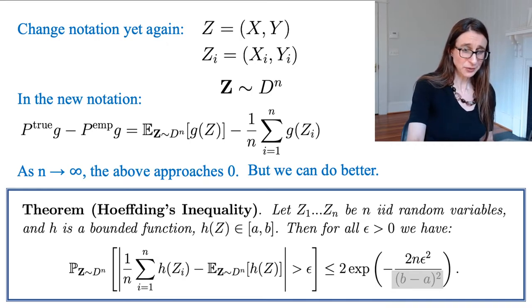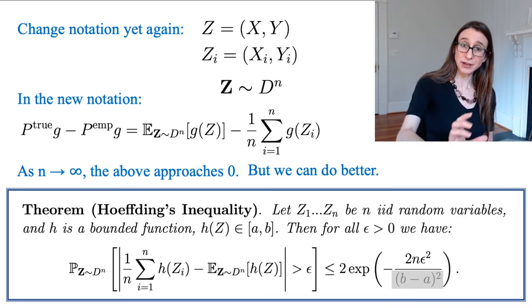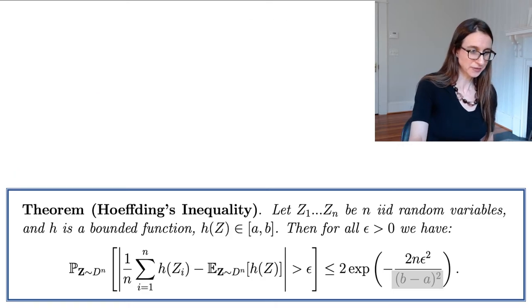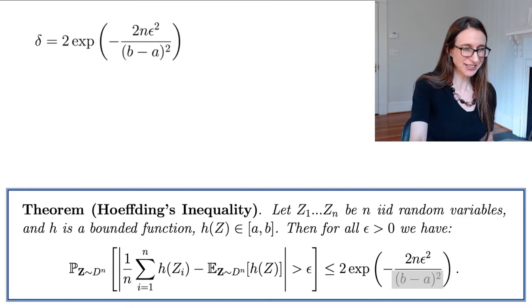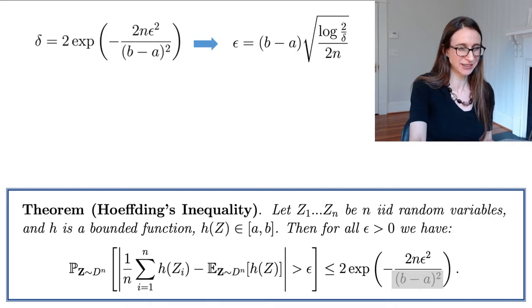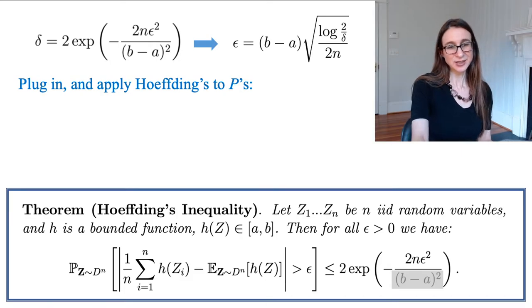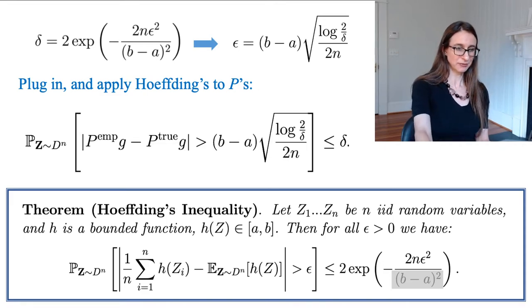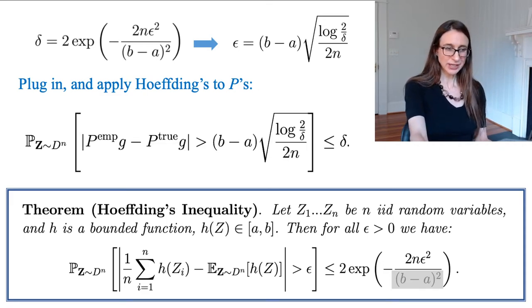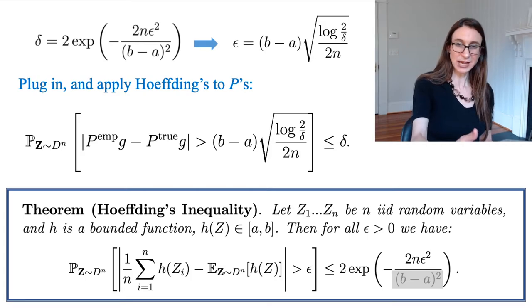So we can bound how far the average is from the expectation. So I'm just going to continue to change notation. I'm going to set the right-hand side of that thing equal to delta, and then I'm going to solve for epsilon. And I get this over here, and then I'm going to plug that back into the bound and apply Hoeffding's inequality to my function G instead of to h, which it was in its original theorem form.